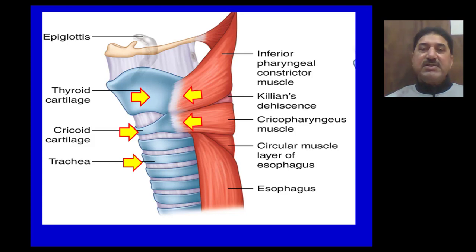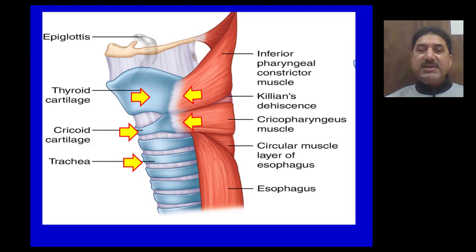The thyroid gland is the largest endocrine gland located in the neck. It has two lobes connected by its isthmus. The isthmus of the thyroid gland rests on the second to fourth tracheal rings. The false capsule of the thyroid gland, derived from pre-tracheal deep cervical fascia, forms a thickening posteriorly called the ligament of Berry, which attaches the thyroid gland to the posteriorly located trachea.